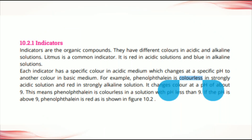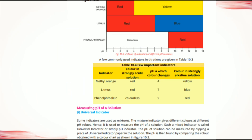For methyl orange: from 0 to 4 the color of methyl orange is red in strongly acidic solution, and from 4 to 14 in strongly basic solution the color of methyl orange is yellow.